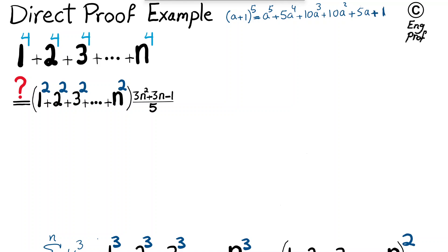This is the well-known binomial expansion of power 5. Now let's substitute: a is an integer, so I'm going to substitute a with n. As a result, n plus 1 to the power 5 is equal to n to the power 5 plus 5n to the power 4 plus 10n to the power 3 plus 10n to the power 2 plus 5n plus 1.